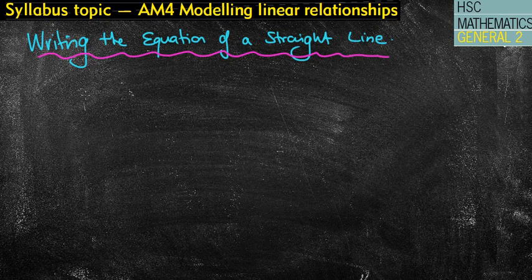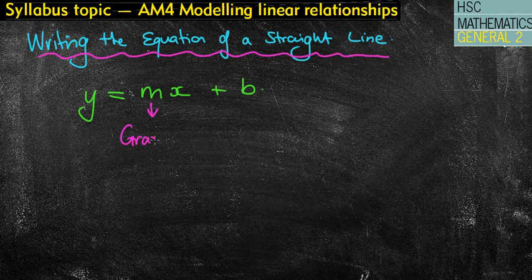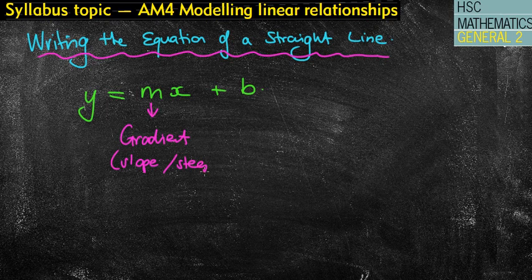Just going to review the equation of a straight line, which is y equals mx plus b, reminding that the m means the gradient, which we have referred to previously as the slope or the steepness, or the rate of change between the x and y values.